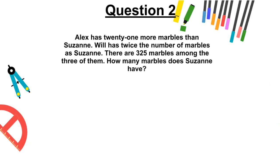Question 2. Alex has 21 more marbles than Suzanne. Will has twice the number of marbles than Suzanne. There are 325 marbles among the three of them. How many marbles does Suzanne have? A, 152, B, 76, C, 97, or D, 100?